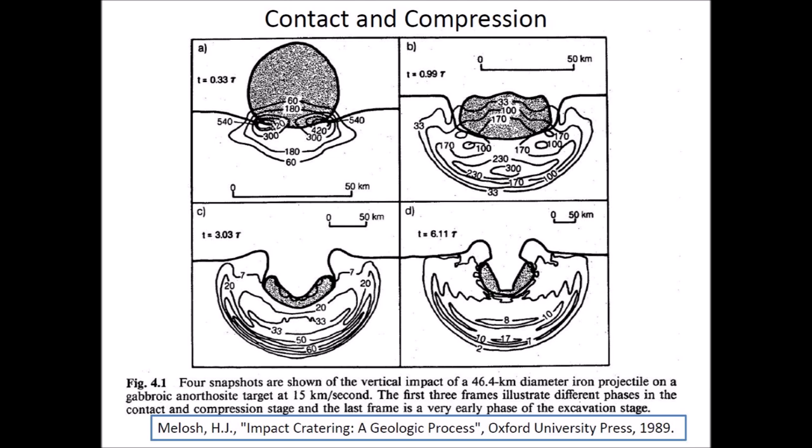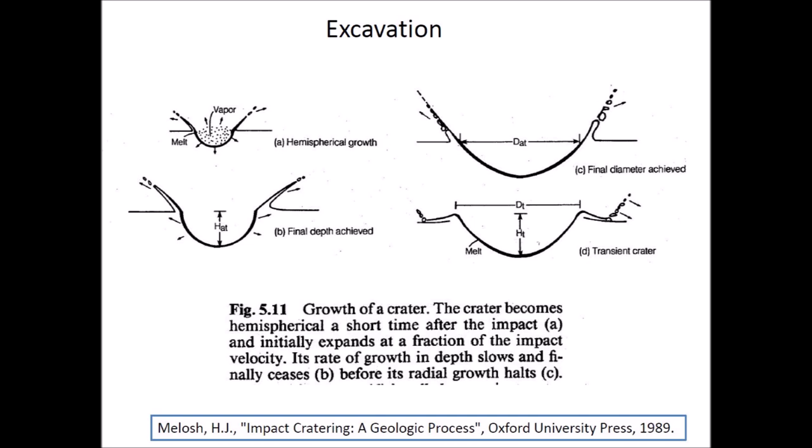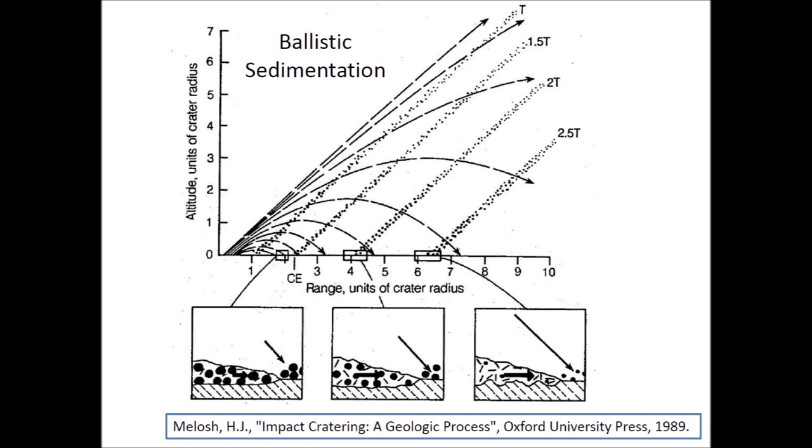The excavation stage begins immediately after the contact and compression stage. A hemispherical shock wave propagates through the target, creating a hemispherical crater shortly after the impact. The crater diameter initially expands by horizontal compressive forces at a fraction of the impact velocity, but the rate of growth in depth slows and finally ceases before its radial growth stops. During the excavation phase, material is ejected in the form of an expanding conical ejecta curtain. The innermost ejecta are launched first, traveling fastest in parabolic trajectories, while ejecta originating further from the center are launched later and fall nearer the rim.